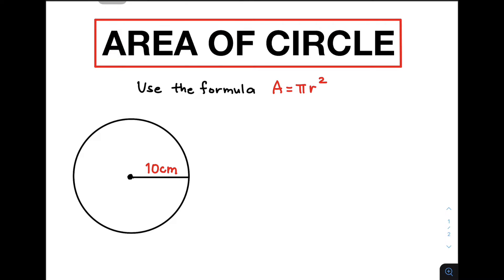In finding the area of a circle, we will use the formula: area, or A, is equal to pi r squared. Now, basically guys, your pi here is approximately 3.14.